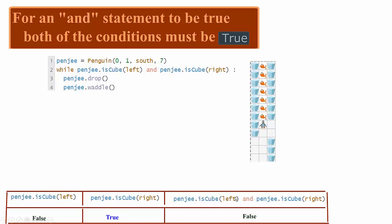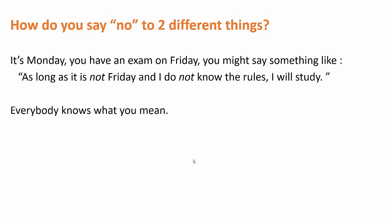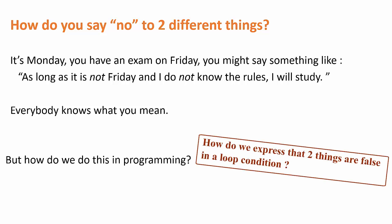For most of this video, we're going to be focusing on compound statements with AND. What we want to do today is look at how to negate that. Let's think about something in real life — how you would say no to two different things. Imagine it's Monday and this Friday you've got a test. You might say: as long as it is not Friday and I do not know the rules, I will study. The test hasn't happened yet, you don't know what you're doing — those are two things connected by AND, and as long as both are not true, you're going to study.